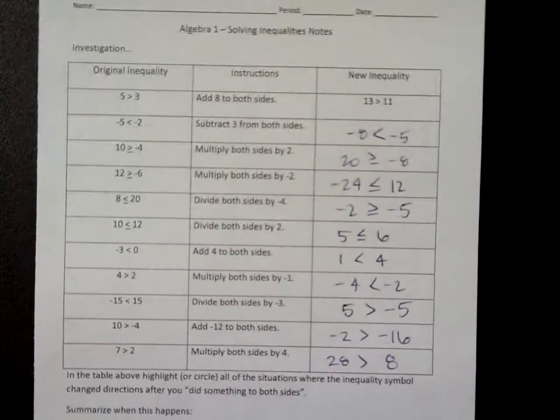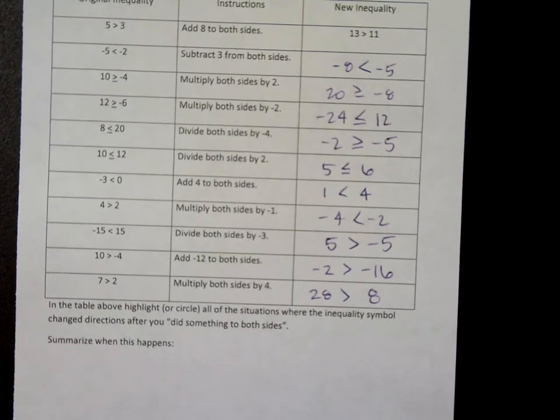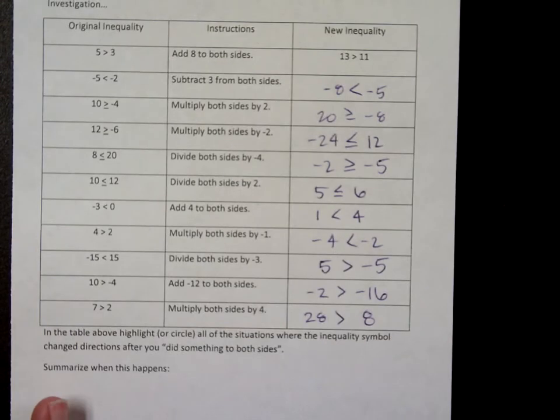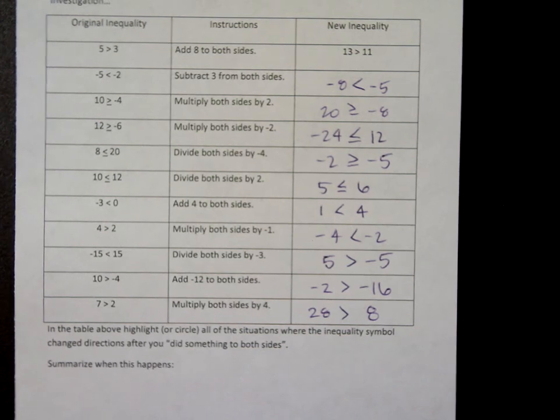Okay, so this is what you should have at this point. Double check your answers real fast. At the very bottom, it says, in the table above, highlight or circle all the situations where the inequality symbol changed directions after you did something to both sides.